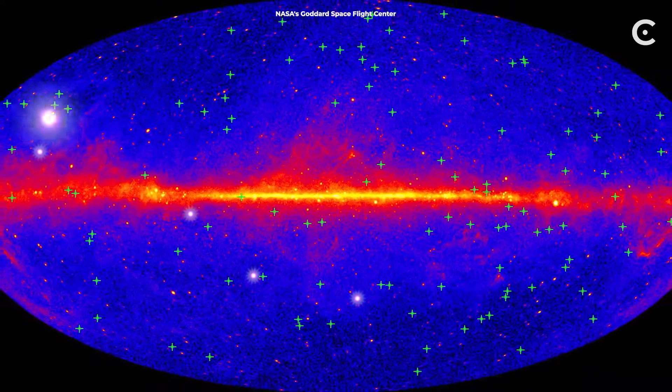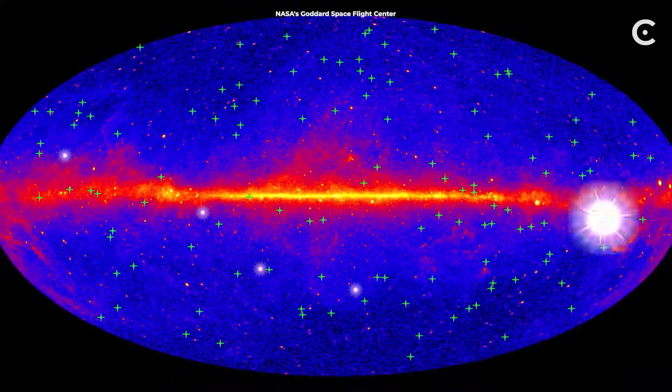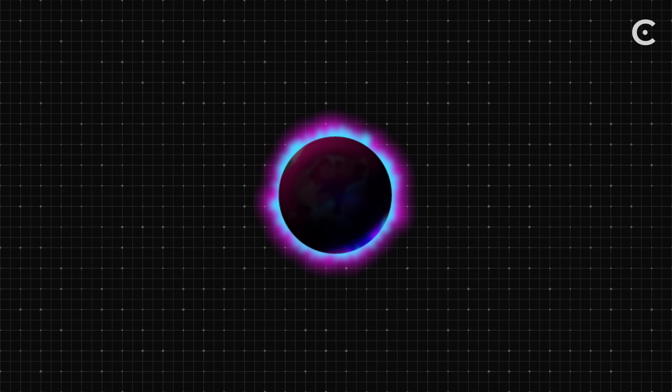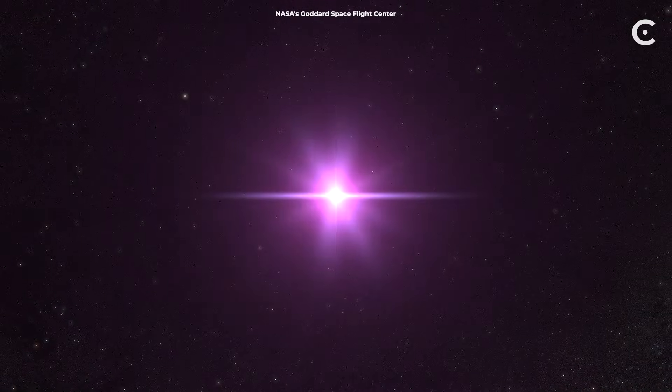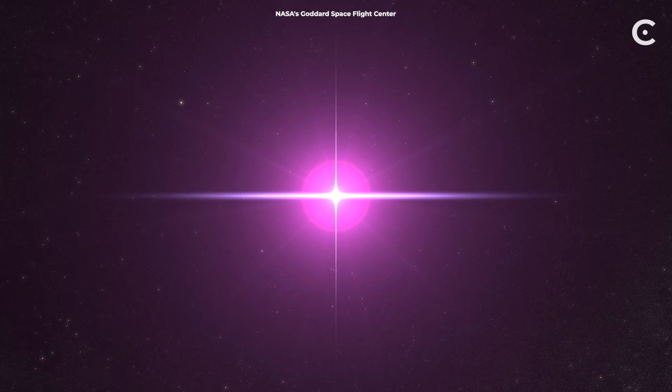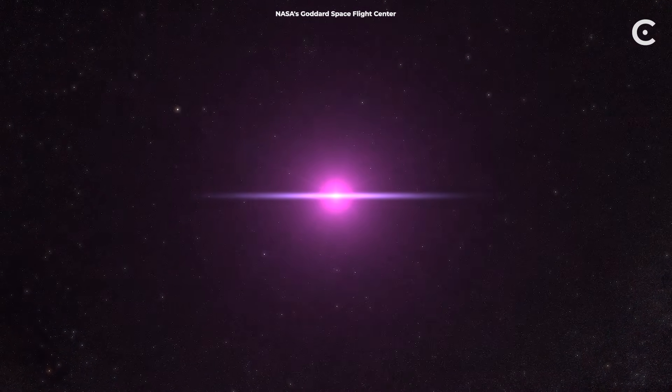Unlike gamma-ray bursts from colliding neutron stars, there would be no afterglow in X-rays or visible light. A primordial black hole burst would be a naked flash of Hawking radiation, with a spectrum peaking in high-energy gamma rays, far harder than most cosmic explosions.